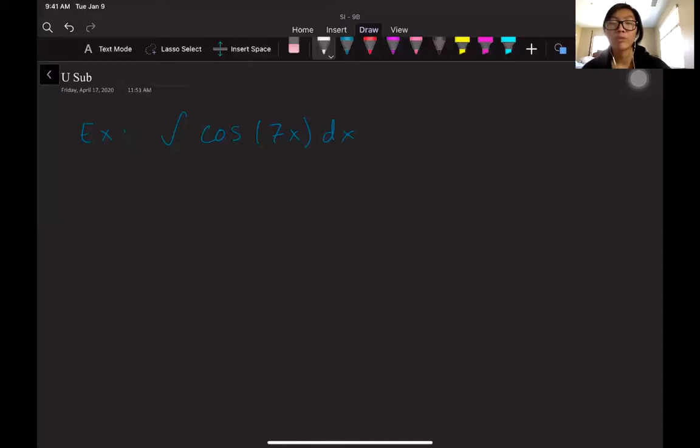is we have to pick our u. The way that I pick u, my rule of thumb, is I will pick either the function that is the most complicated or the piece that is making my life the most complicated. What that means is